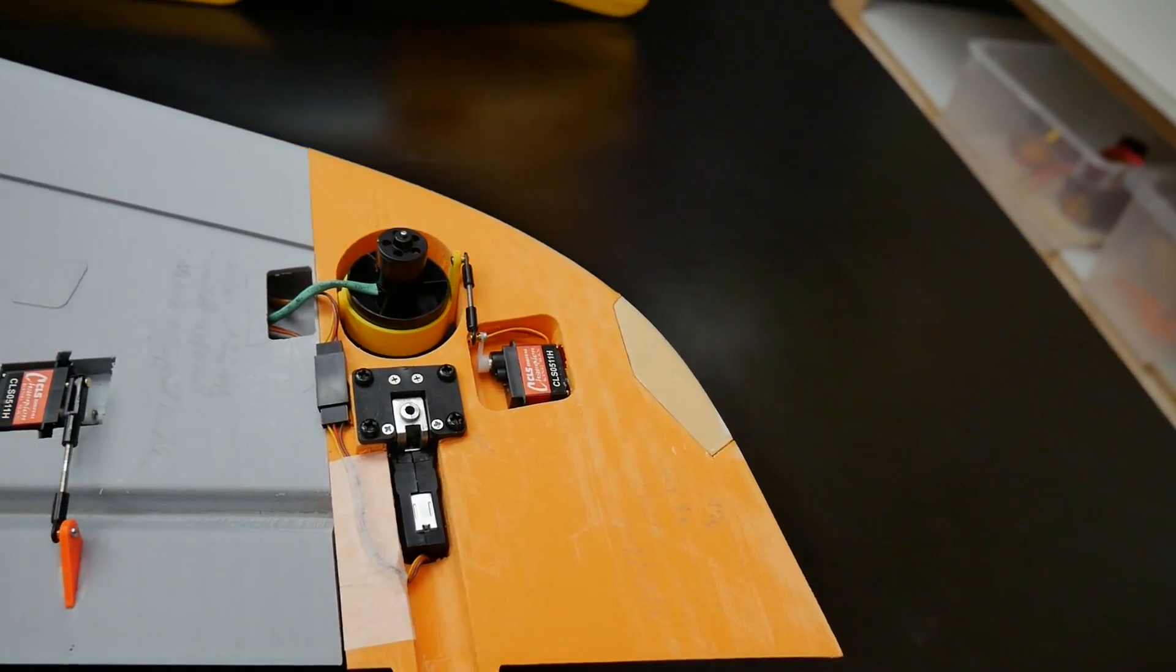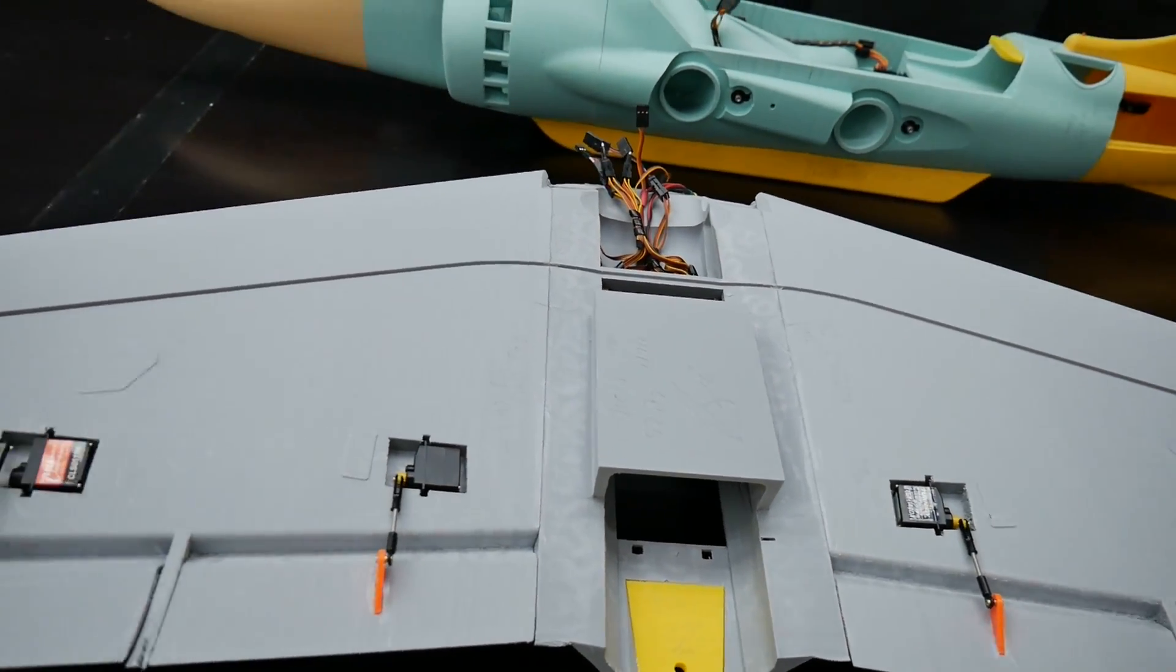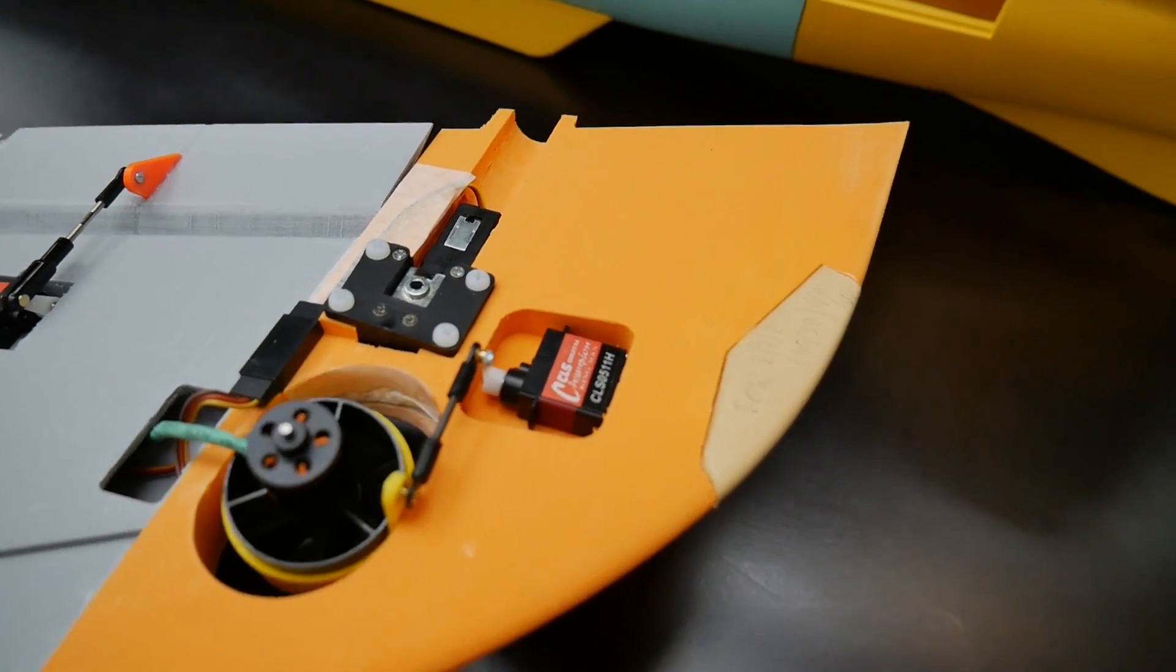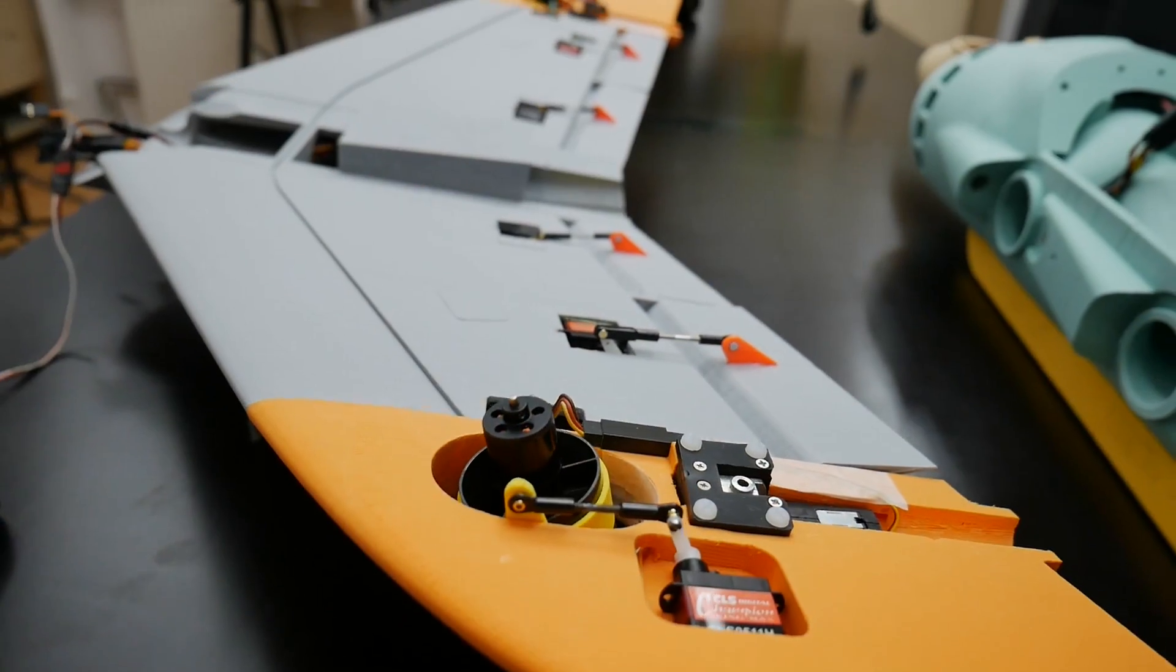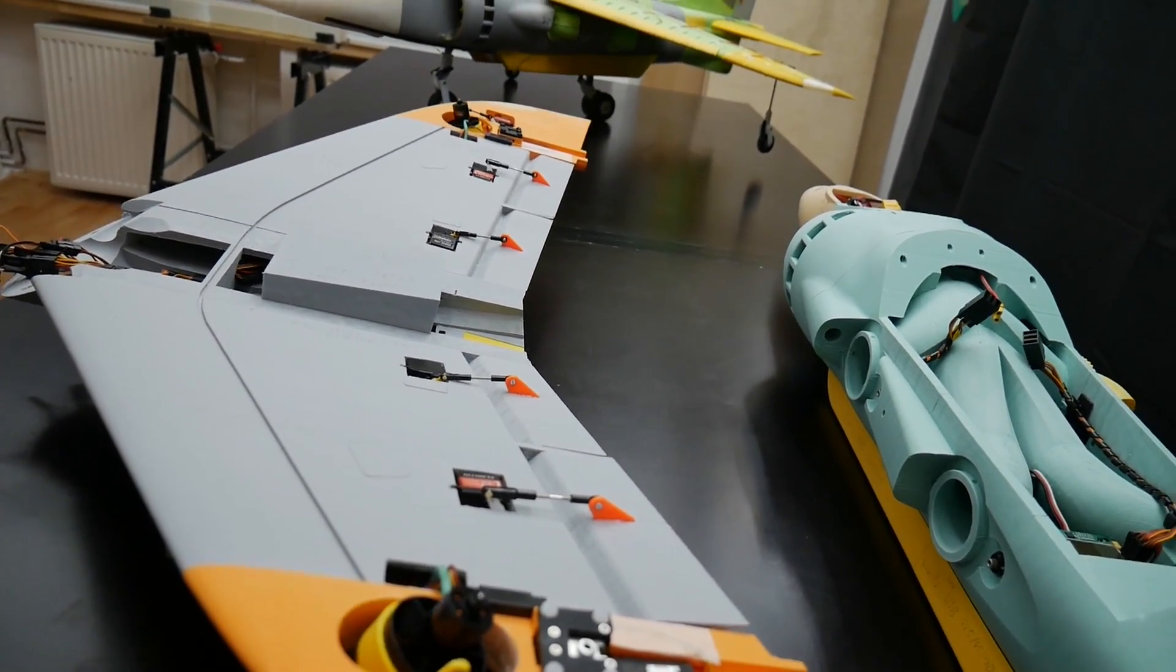The swiveling nozzles are activated by a 9g servo which is really fast. And both sides work on the opposite direction. This means when one goes to the front, the other side goes to the rear, to give it a very good yaw momentum.